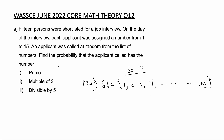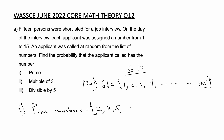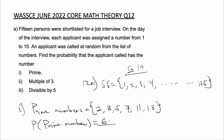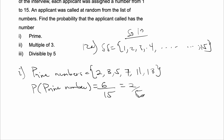Now we are finding the probability that the applicant's code is a prime number. Let's list all the prime numbers in our sample space: 2, 3, 5, 7, 11, and 13. So the probability of selecting a prime number is equal to the total number of prime numbers, which is 6, over the total number of values, which is 15. This is equal to 2 over 5. Now the probability of selecting a multiple of 3.